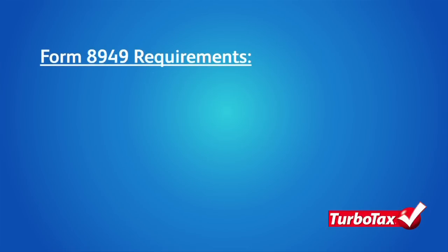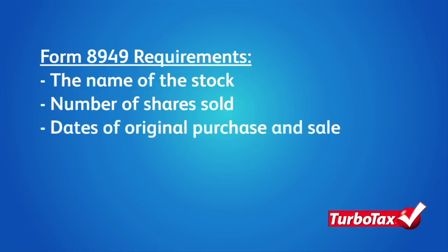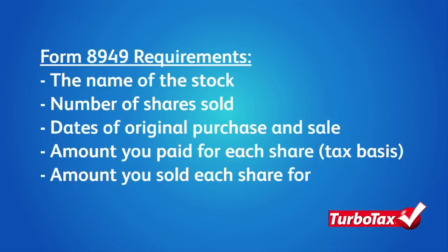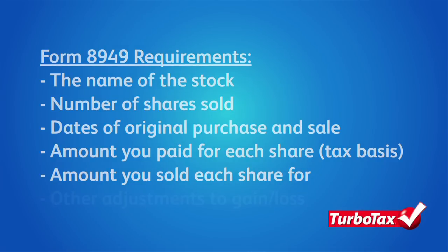There are additional pieces of information that your Form 8949 will require, such as the name of the stock, the number of shares you sold, the date of each purchase and sale, the amount you paid for each stock, the amount you sold it for, and all required adjustments to the gains and losses you report.